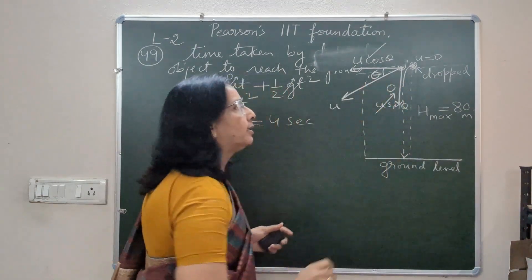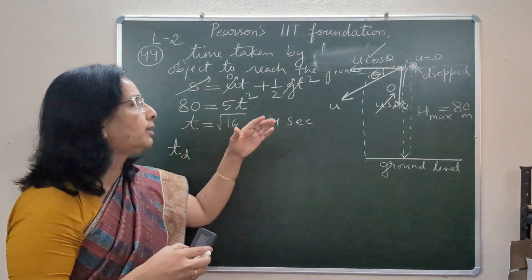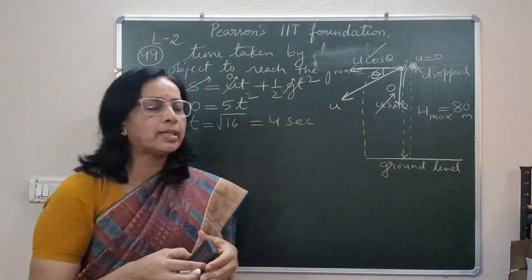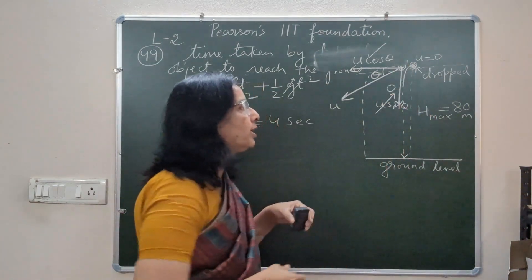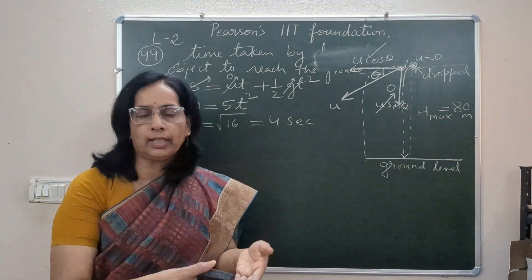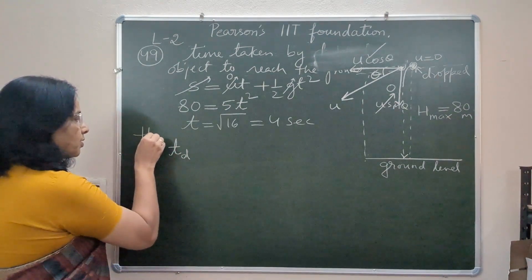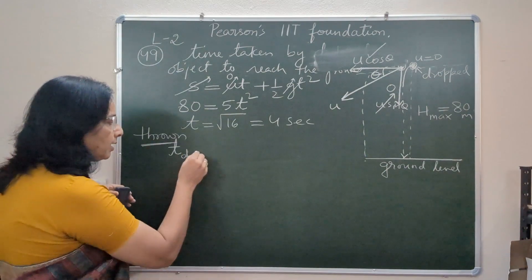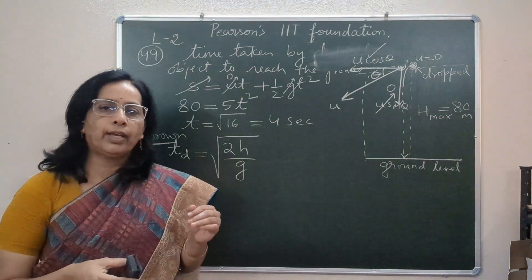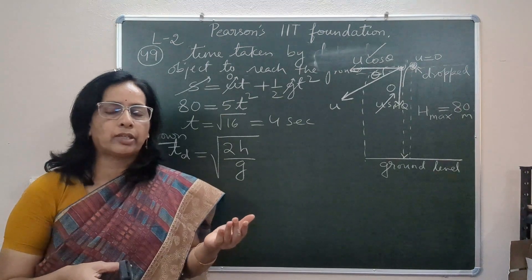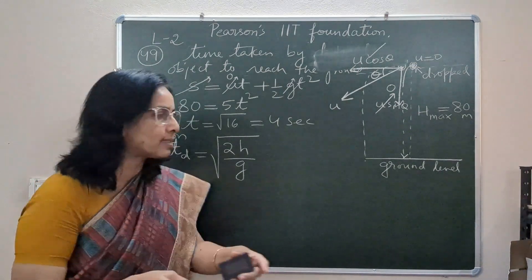Now this object is thrown horizontally, so the horizontal component of velocity works but the vertical component of velocity is zero in this case. The thrown object is in a way kind of dropped because its vertical velocity is not working. For the time of descent of the thrown object, we use the formula t = √(2h/g), which was derived in earlier videos where time of ascent and time of descent were shown to be equal.